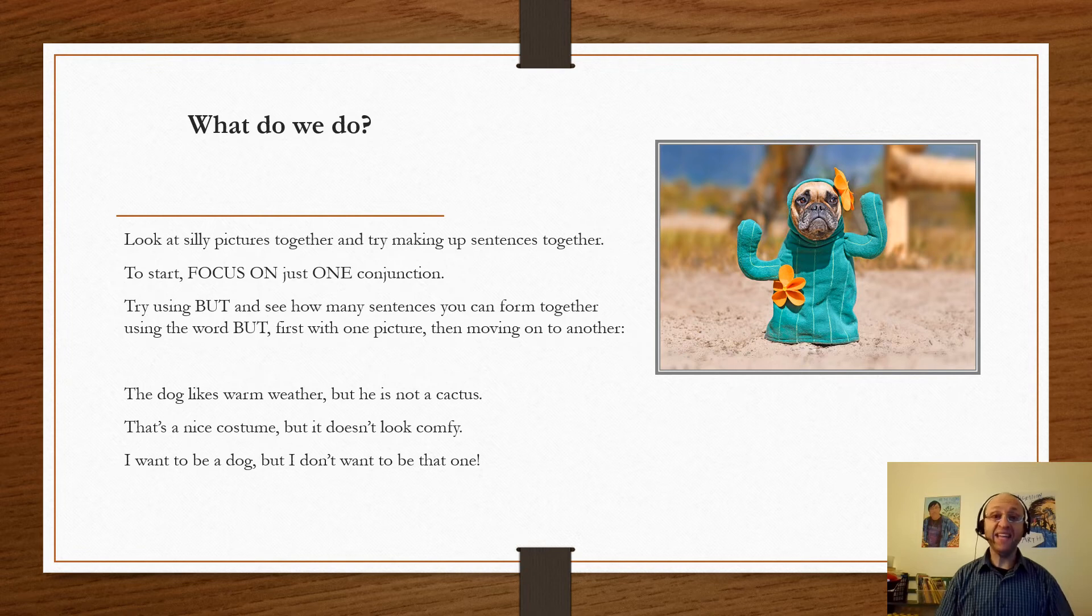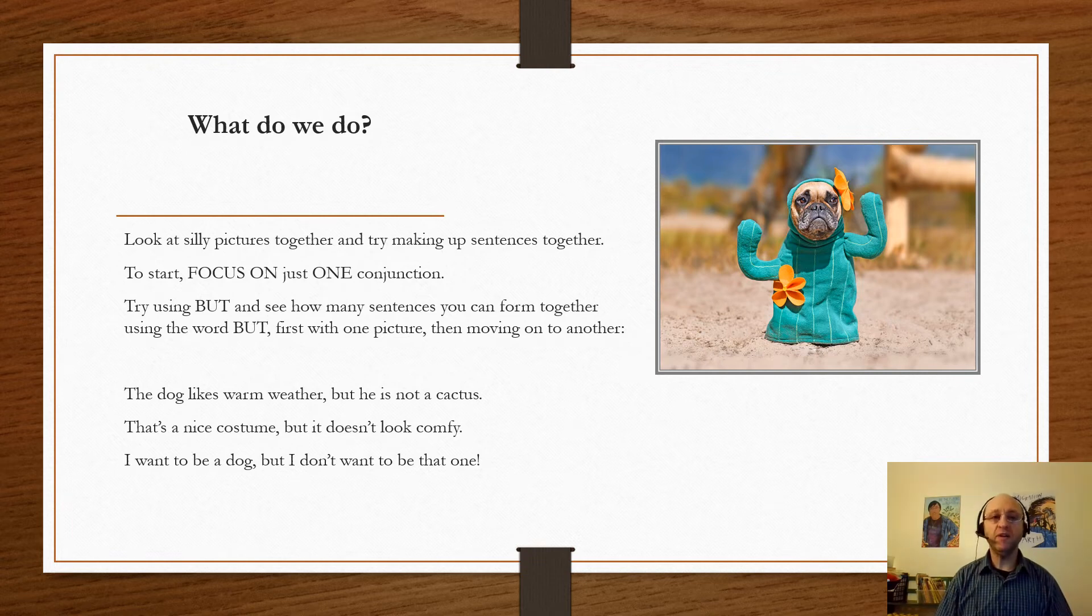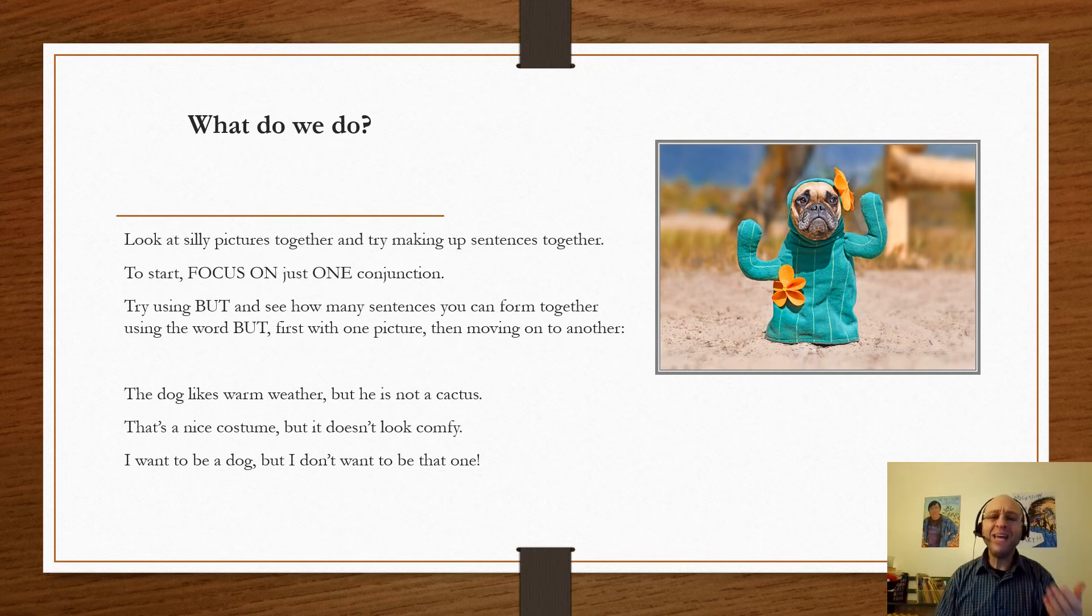But if it's something that makes you giggle and they enjoy spending time with you, you just got a twofer. So you're gonna choose just one conjunction to work on and focus on making as many sentences as you can about the picture with the one conjunction.